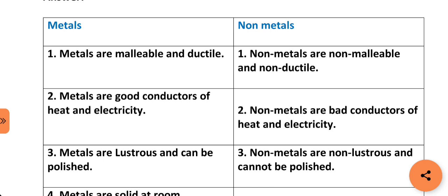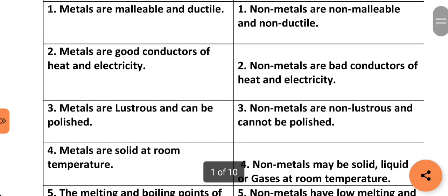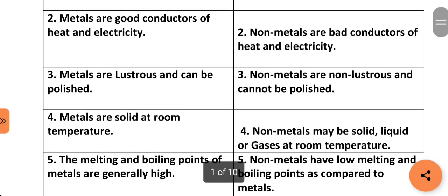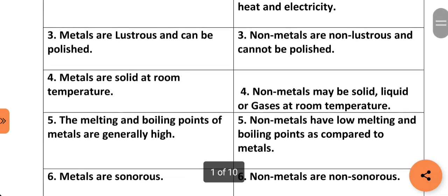Metals are lustrous and can be polished, whereas non-metals are non-lustrous and cannot be polished. Metals are solid at room temperature, whereas non-metals may be solid, liquid, or gas at room temperature. The melting and boiling points of metals are generally high, whereas non-metals have low melting and boiling points. Metals are sonorous, i.e., metals can produce sound, whereas non-metals are non-sonorous.